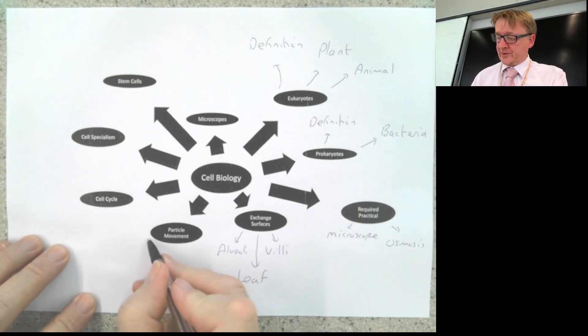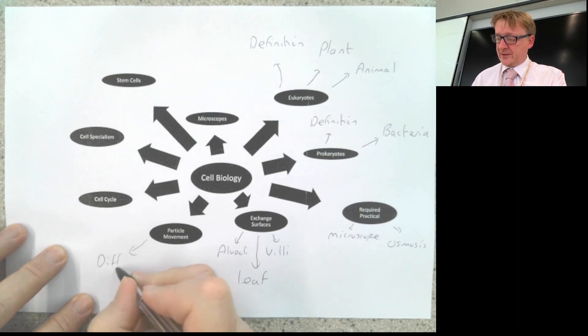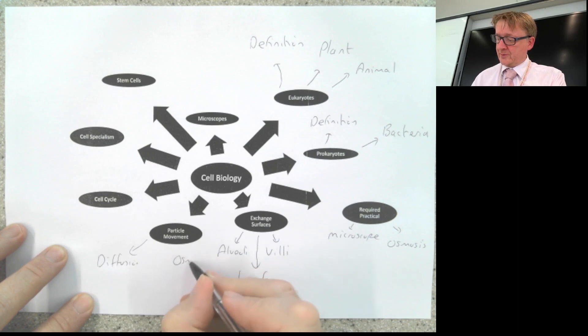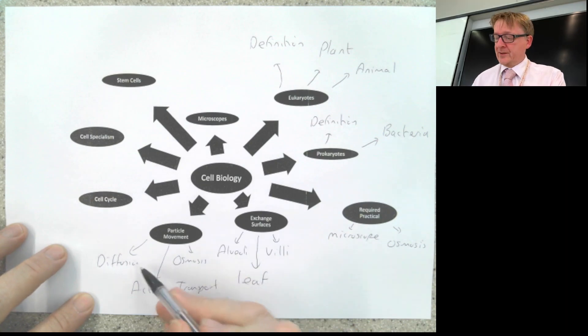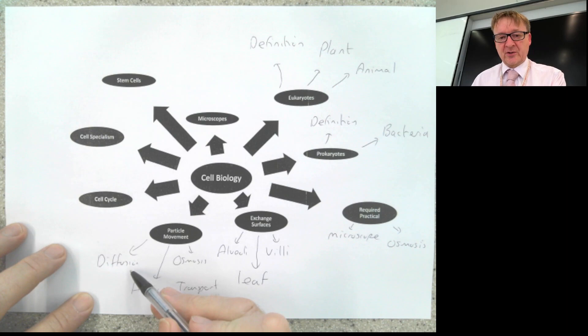Particle movement requires three definitions. First, diffusion: the movement of particles from high concentration to low concentration down a concentration gradient. Second, osmosis: you add in water and a semipermeable membrane. Third, active transport goes the opposite way and requires energy.